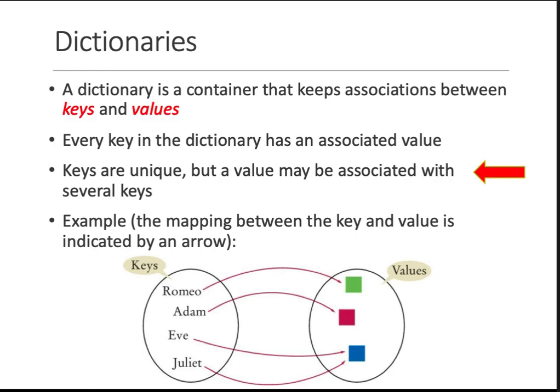The next topic we're going to discuss is dictionaries. So what is a dictionary? A dictionary is basically a container that keeps an association between key-value pairs. In normal dictionaries, when you open a dictionary and go to a specific word, you can read the word and then read its description or definition. So the key is the word and the value is the description or the definition. You can think of it in that manner.